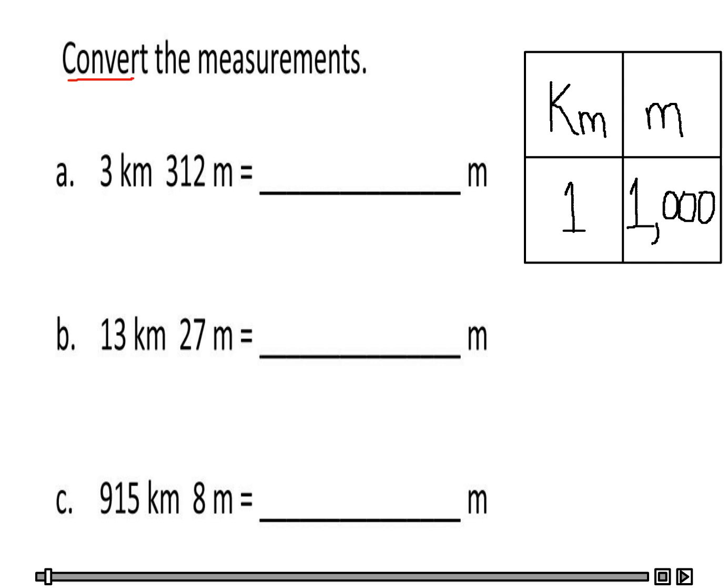Okay, we're going to convert the measurements to meters. Take a look at our chart. We have learned from previous lessons that one kilometer is one thousand meters. So what I want to do with the first problem is three kilometers 312 meters. I want to change three kilometers to meters.